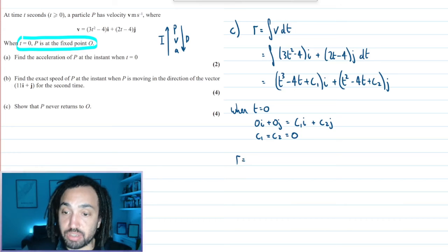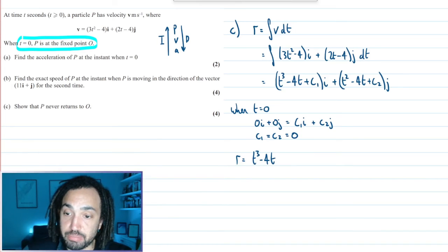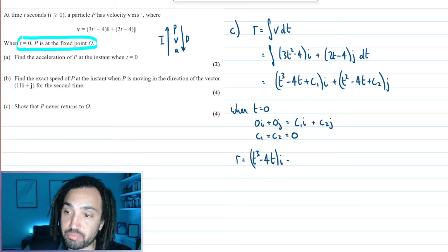So I now know that my position vector is t cubed minus 4ti plus t squared minus 4tj.